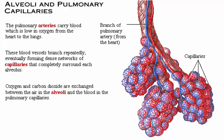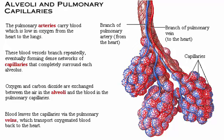This rich blood supply allows for the efficient exchange of oxygen and carbon dioxide between the air in the alveoli and the blood in the pulmonary capillaries. Blood leaves the capillaries via the pulmonary veins, which transport the freshly oxygenated blood out of the lungs and back to the heart.